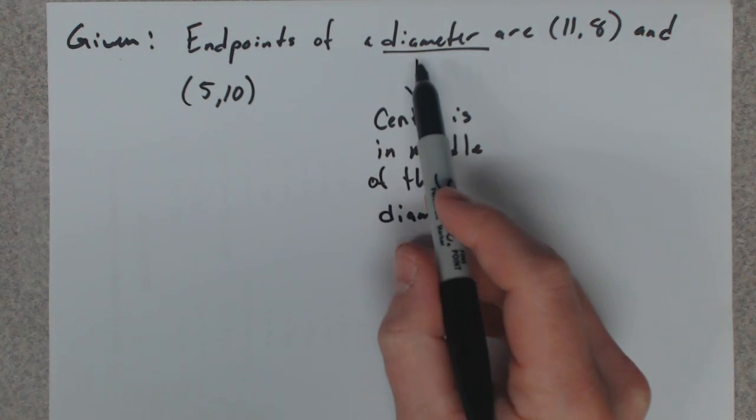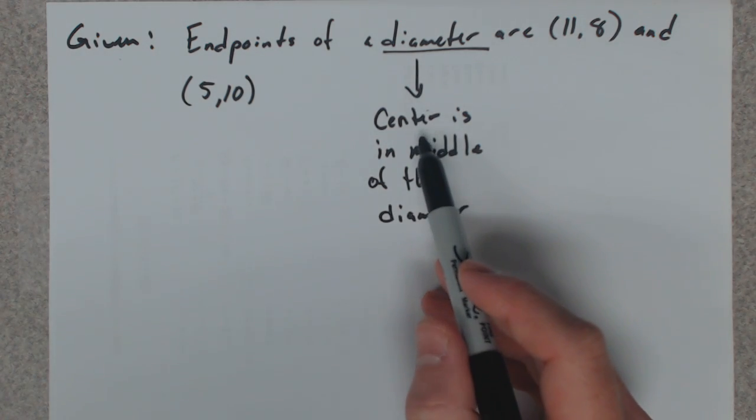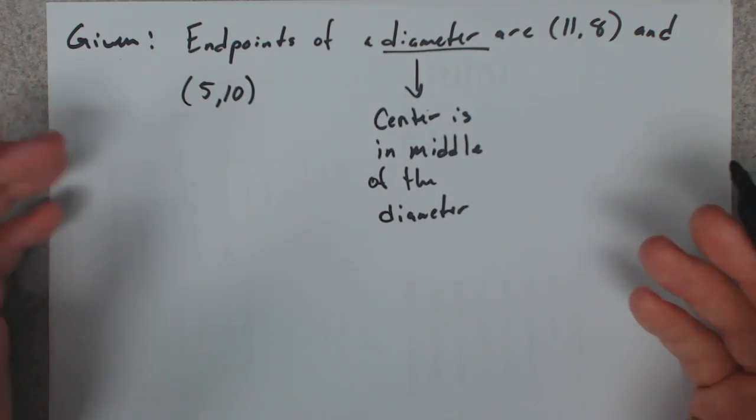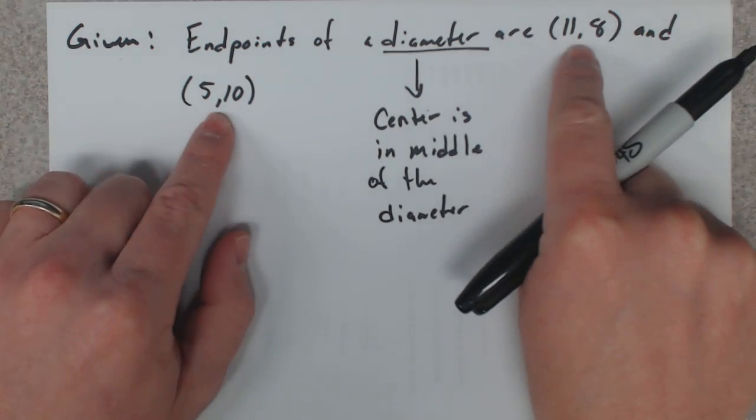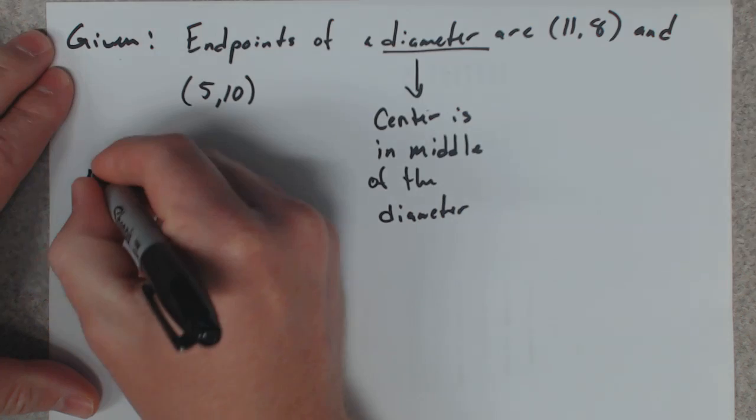So if I can find the middle of the diameter, I've found the center. And we can do that by finding the midpoint between those two points. So we're going to find the midpoint.